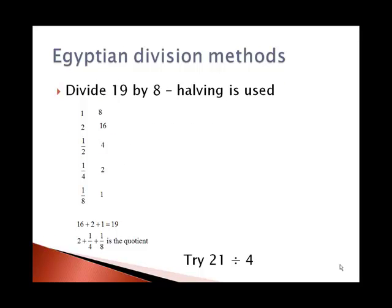If we want to take 19 divided by 8, we might have to use some halves. First I start off with 1 and 8. I double 1 and 8 to get 2 and 16. I have 16; I just need 3 more to get to 19, but 8 is bigger than 3. So I take the 1 and the 8 and halve them to get 1 half and 4. I halve those to get 1 fourth and 2. Then I halve again to get 1 eighth and 1. Now 16 plus 2 plus 1 in the right column is 19. The left column numbers corresponding to those rows — 2, 1 fourth, and 1 eighth — give the quotient. The Egyptians would leave it as unit fractions; you and I might call it 2 and 3 eighths. Please try this with 21 divided by 4.